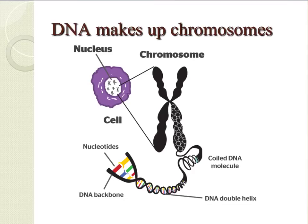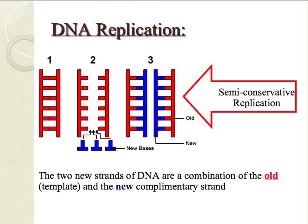Chromosomes are made of coiled DNA molecules and are found inside the nucleus of a cell. During S phase, the cell prepares to double or replicate its DNA. This is done by unzipping the DNA molecule and using each of the sides as a template. The two new strands of DNA are a combination of the old and the new complementary strand. This is also referred to as semi-conservative replication.